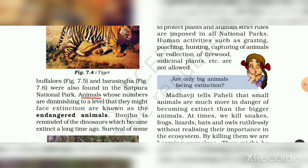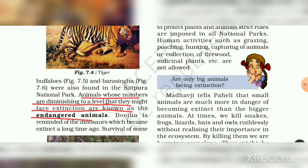Animals whose numbers have reduced to a level that they might face extinction are known as endangered animals. So what are endangered animals? They are animals whose numbers have declined to such a point that they are at risk of extinction.